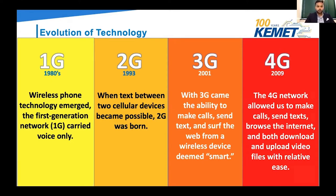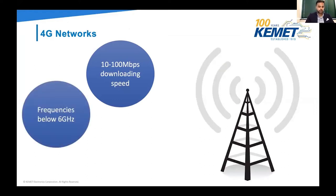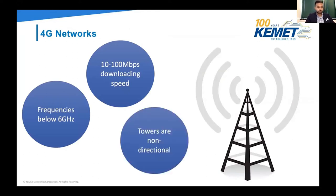Let's talk about the 4G networks. The downloading speeds are between 10 to 100 megabits per second. The frequencies are below 6 gigahertz. Also, the towers are non-directional, meaning the 4G cell towers can fire data in all different directions. As you can imagine, that's wasting a lot of energy beaming radio waves at locations that are not requesting access to the internet. Today's mobile networks use low frequencies because it's best to cover larger areas.